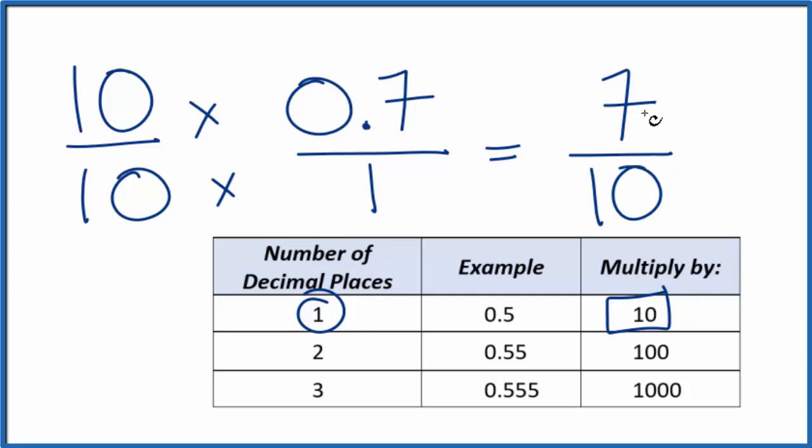This is Dr. B, expressing the decimal 0.7 as a fraction. It's 7 tenths. Thanks for watching.